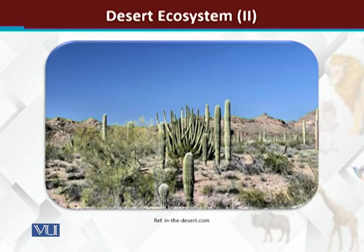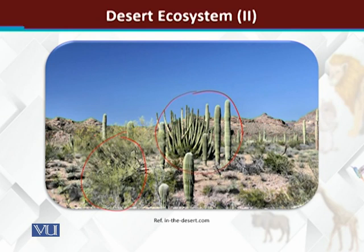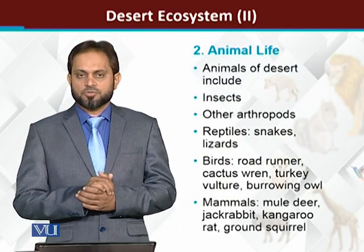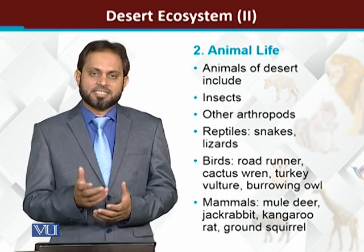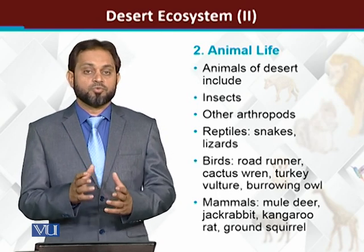They can survive drought conditions. Looking at the diagram, we can observe these plants. The leaves are almost reduced. Overall, the plant life observable in the desert ecosystem is very rare — very rare.